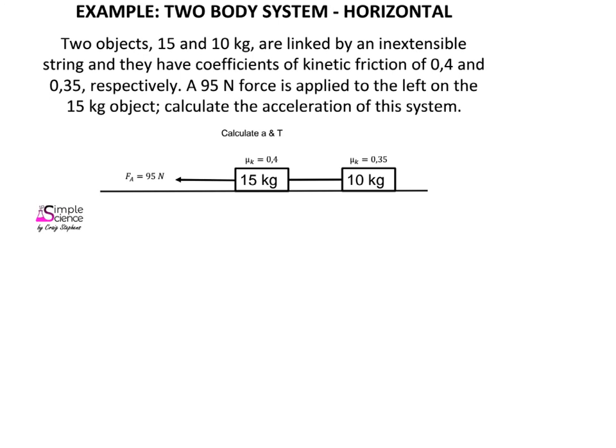The simplest example of a two-body system is where both objects are on a horizontal plane. We have a 15 kilogram object with a coefficient of kinetic friction of 0.4, a 10 kilogram object with a coefficient of kinetic friction of 0.35, and an applied force of 95 newtons to the left on the 15 kilogram object. We are asked to calculate the acceleration of the system and the tension in the rope.